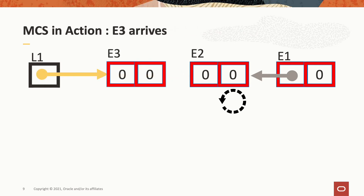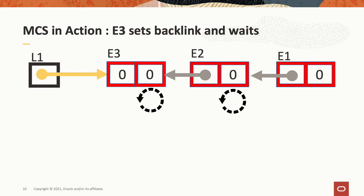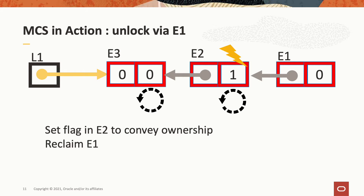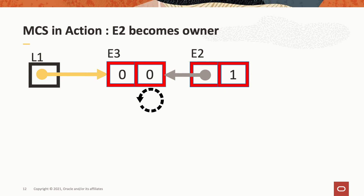Then another thread arrives and posts queue element E3 to the tail of the queue. In this case, the return value from the swap operation is E2. The thread that appended E3 then updates E2's backlink to point to E3 and then proceeds to busy wait on the flag inside E3. The current owner is the thread that posted E1. That thread then proceeds to unlock L1 by following E1's backlink to reach E2, then sets the busy waiting flag in E2 to convey ownership to the thread that posted E2, and then finally reclaims E1. The thread that posted E2 notices the change to its busy waiting flag from 0 to 1, indicating it is now the owner and can enter the critical section.